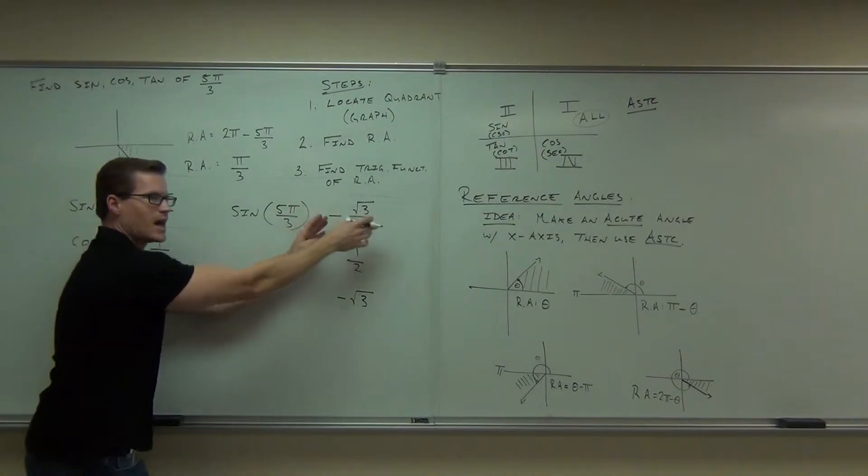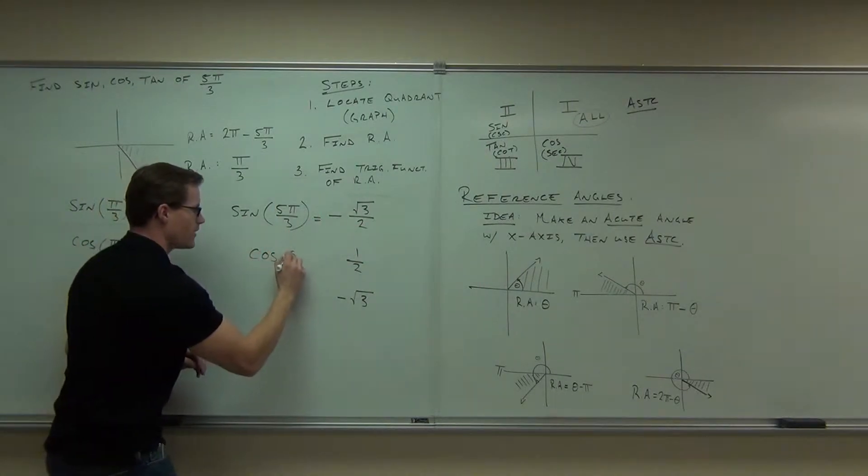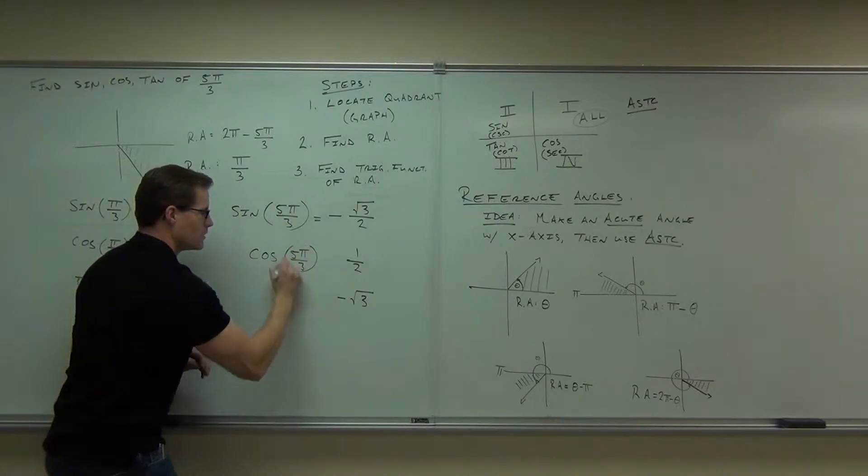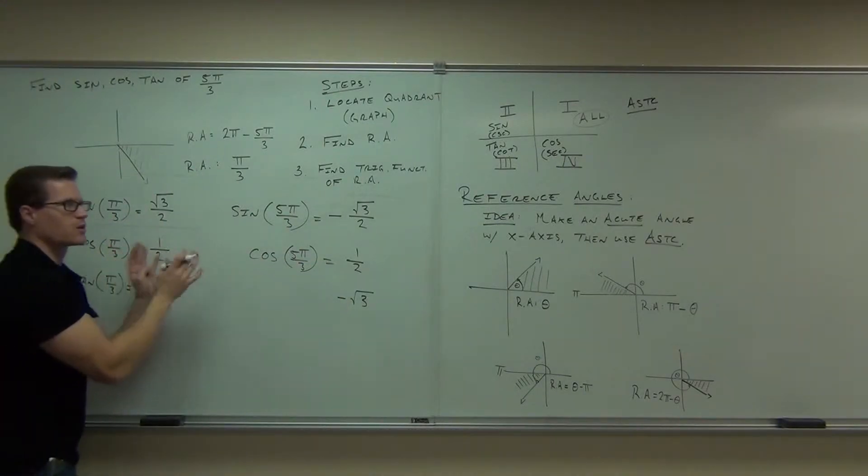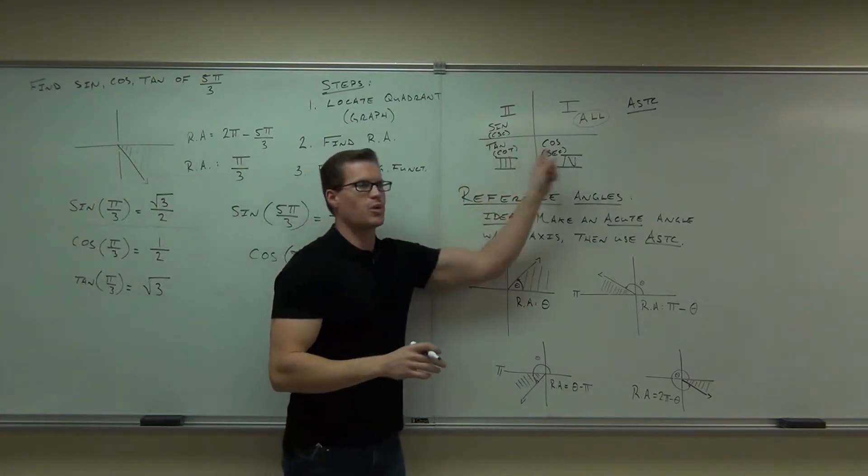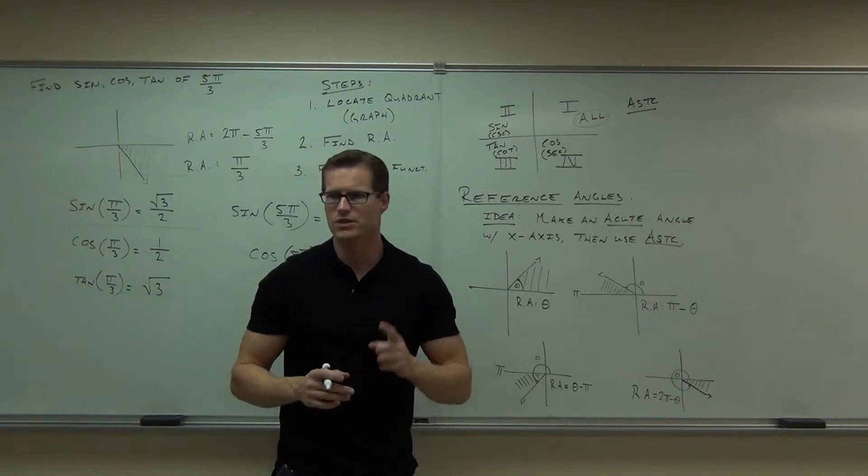Sine of 5π/3 is that. Because we already did the reference angle, now we know the sine. Cosine of 5π/3 is 1 half. Why? Because I already did the legwork. I know the value. I'm just trying to figure out the sign. If cosine is still positive there, notice if we do the reference angle, it's all based on quadrant 1.